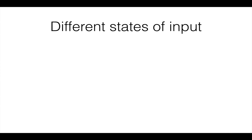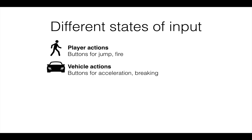Then there are different states of input. So you might have player actions — buttons for moving, jumping, fire, stuff like that. Then you might have a state where the player has entered a vehicle, and now the input is about acceleration, braking, and moving around that way — different buttons doing different things.